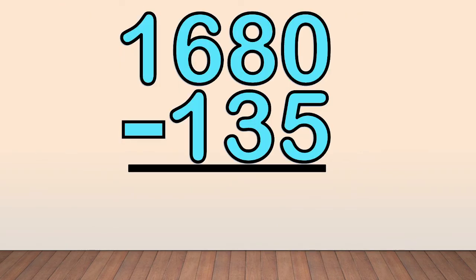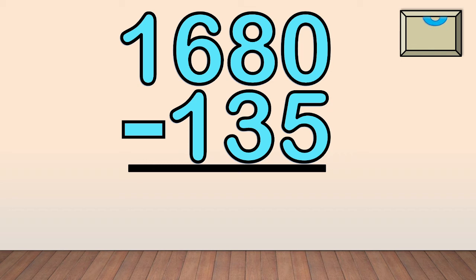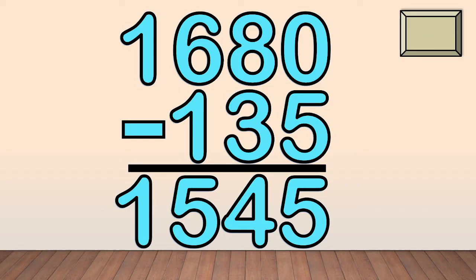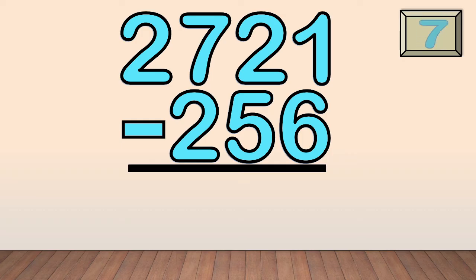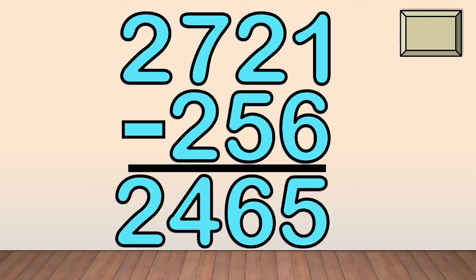Quiz time! Let's answer this — you only have 10 seconds to answer each question. 1,680 minus 135. The answer is 1,545. 2,721 minus 256. The answer is 2,465.